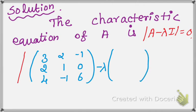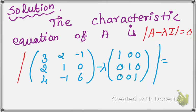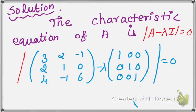The identity matrix I for a 3×3 matrix is [1, 0, 0; 0, 1, 0; 0, 0, 1]. So 3×3 means 3 rows and 3 columns. For a 2×2 matrix it would be [1, 0; 0, 1]. This is the unit matrix.